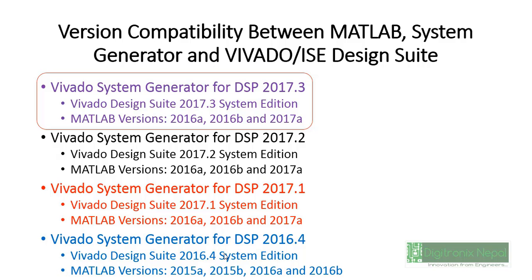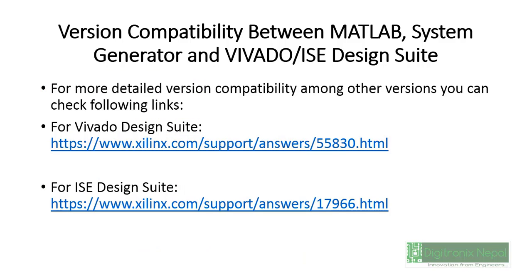Most design systems may use Vivado version 16.4, so you need MATLAB 2015a, 2015b, 2016a, or 2016b. If you have Vivado 17.3, which is one of the latest, you can use MATLAB 2016a, 2016b, or 2017a. For further version compatibility information, go to Xilinx answer record 55830 for Vivado design suite and answer record 17966 for ISE design suite.